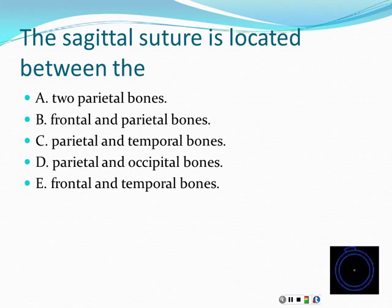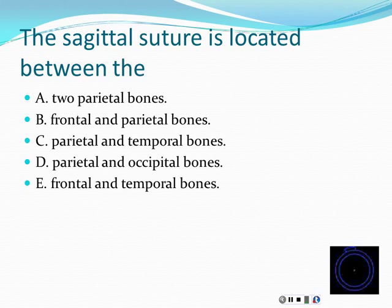The sagittal suture - remember the sagittal plane divides a person into left and right - so the sagittal suture is between the two parietal bones, running along the top of the head. It's worth learning the sutures because they're easy answers if you know the names and which bones they're between. We use sutures as landmarks on the skull, like describing where a skull fracture is. Between frontal and parietal is the coronal suture; parietal and temporal is the squamous suture; parietal and occipital is the lambdoid suture.